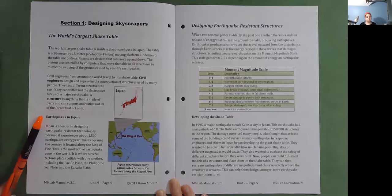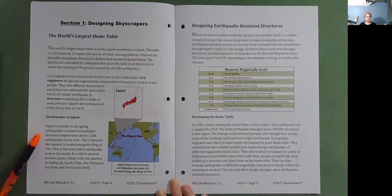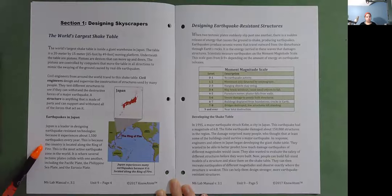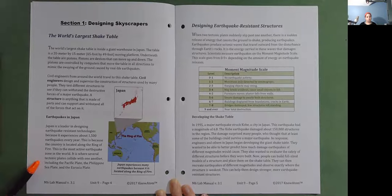Earthquakes in Japan. Japan is a leader in designing earthquake-resistant technologies because it experiences about 1,500 earthquakes every year. This is because the country is located along the Ring of Fire. This is the most active earthquake zone in the world.